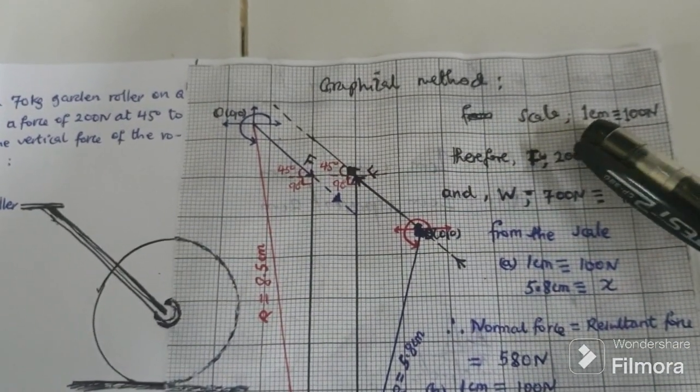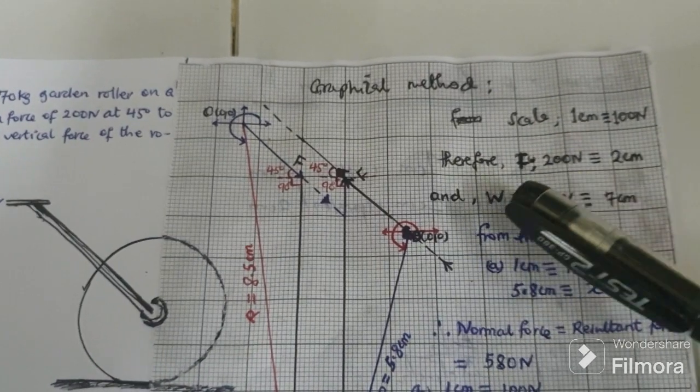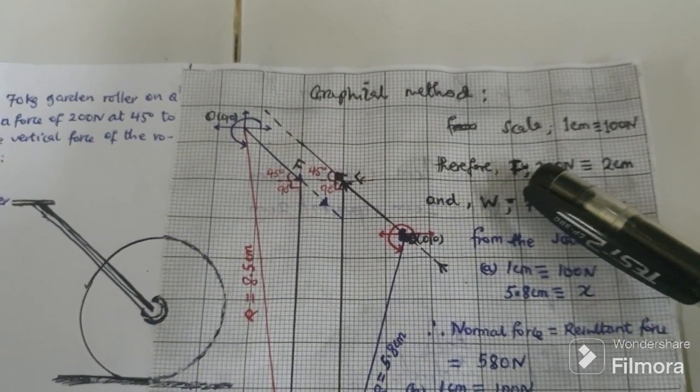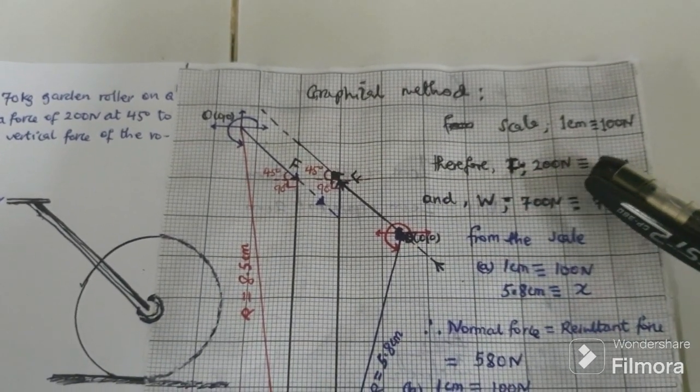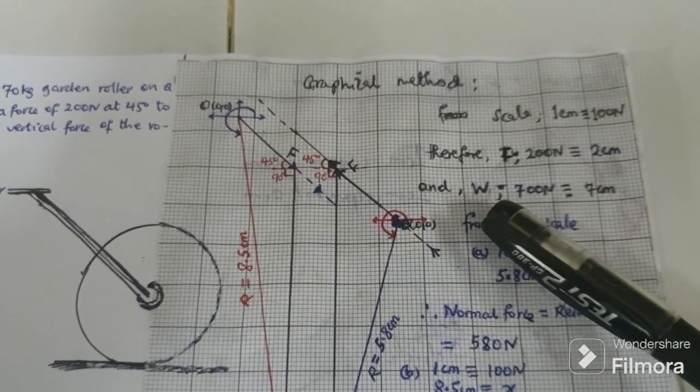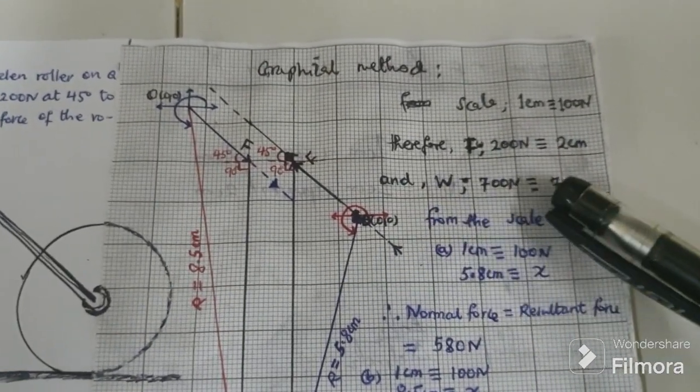We choose a scale of 1 centimeter that represents 100 newtons. And for applied force, 200 newtons is equivalent to 2 centimeter, and for weight of the garden roller is equal to 7 centimeter.